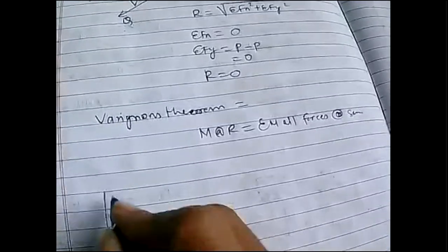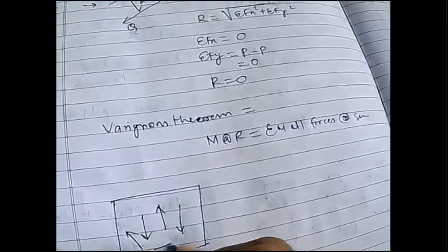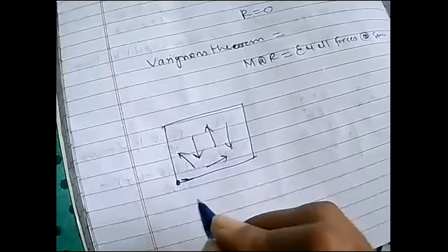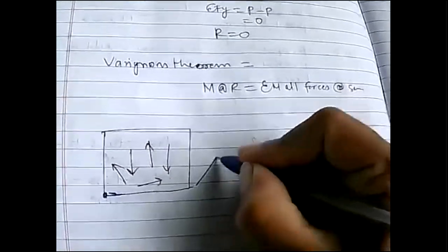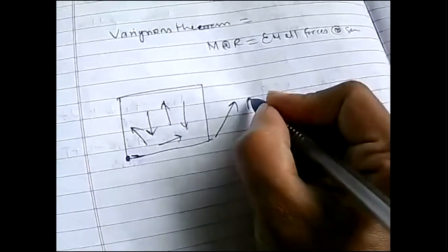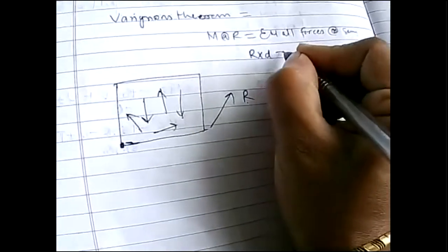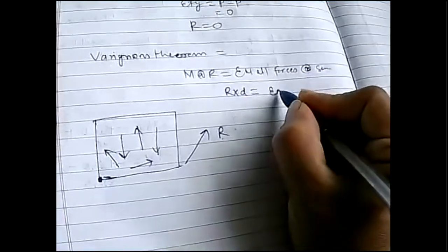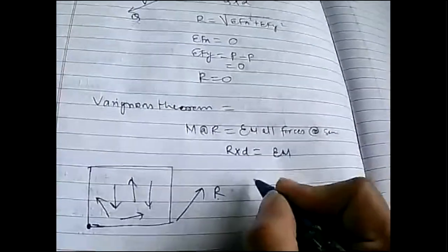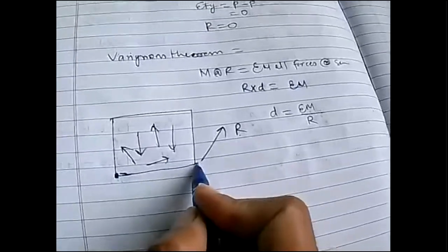If so many forces are acting on a system, I consider one point as a reference and work out the resultant. If my resultant is somewhere here, I take the moment of the resultant about this reference point, which is r into d. This equals the summation of moments of all forces about that specific point. From this I can get the distance of the resultant from that specific point — how far the resultant acts from the reference — using Varignon's theorem.